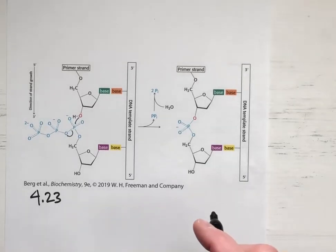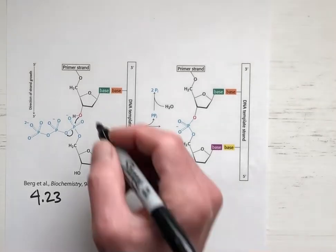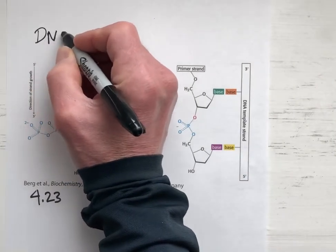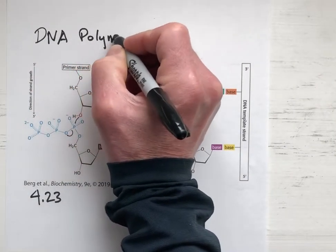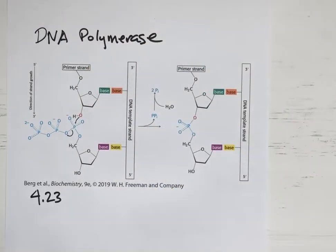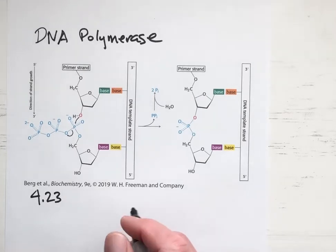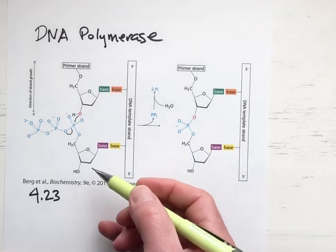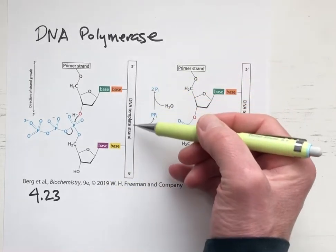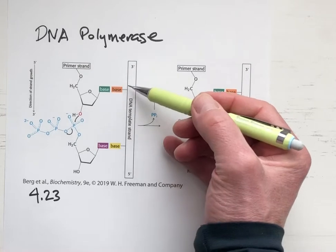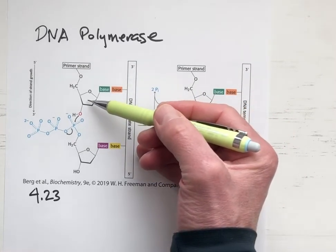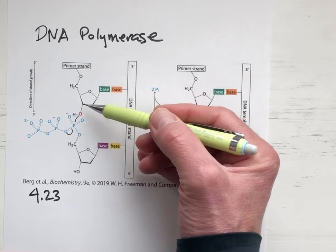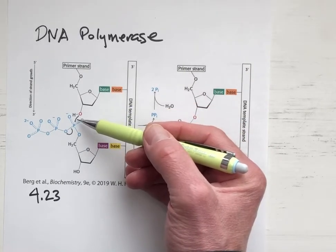This video covers figures from the textbook for our fourth topic, which is DNA polymerase. This figure comes from chapter 4, figure 4.23, and we are looking at the chemistry catalyzed by DNA polymerase. It's a template-directed enzyme, taking information from a template strand and extending the primer strand through a nucleotide nucleotidyl transfer reaction.